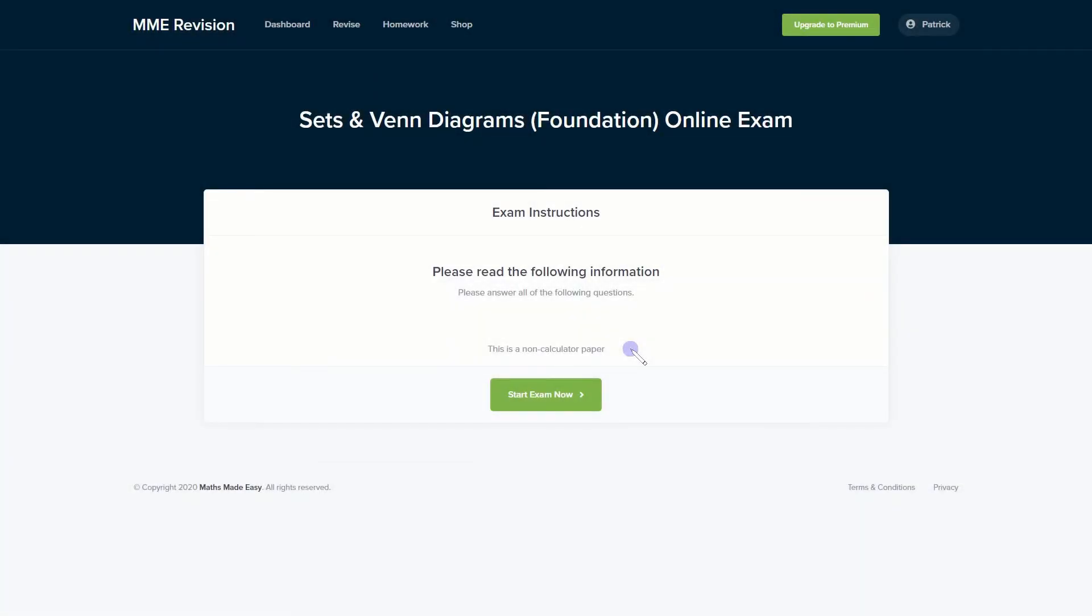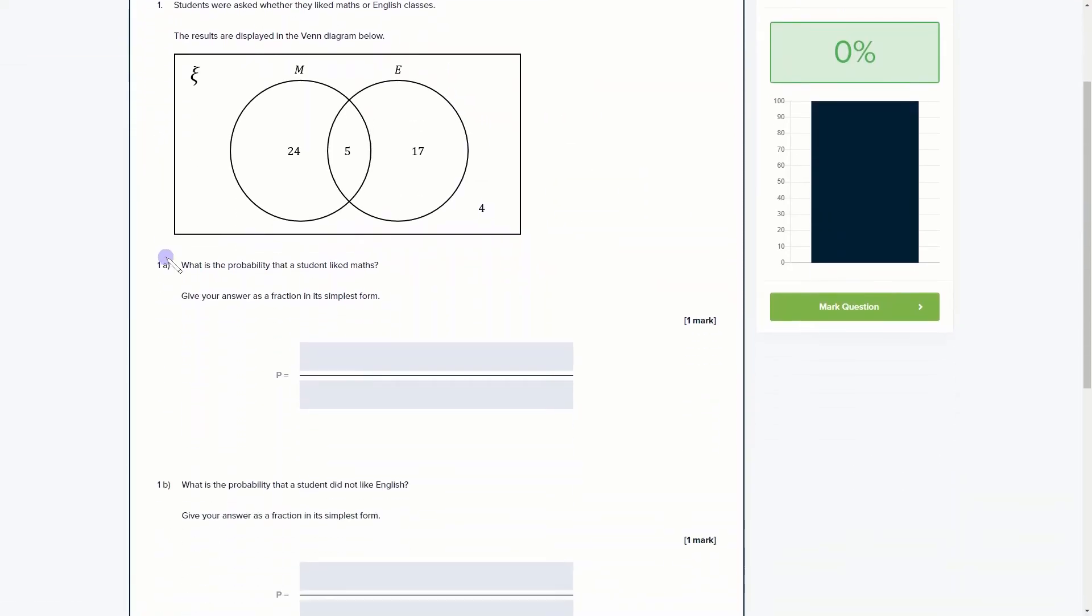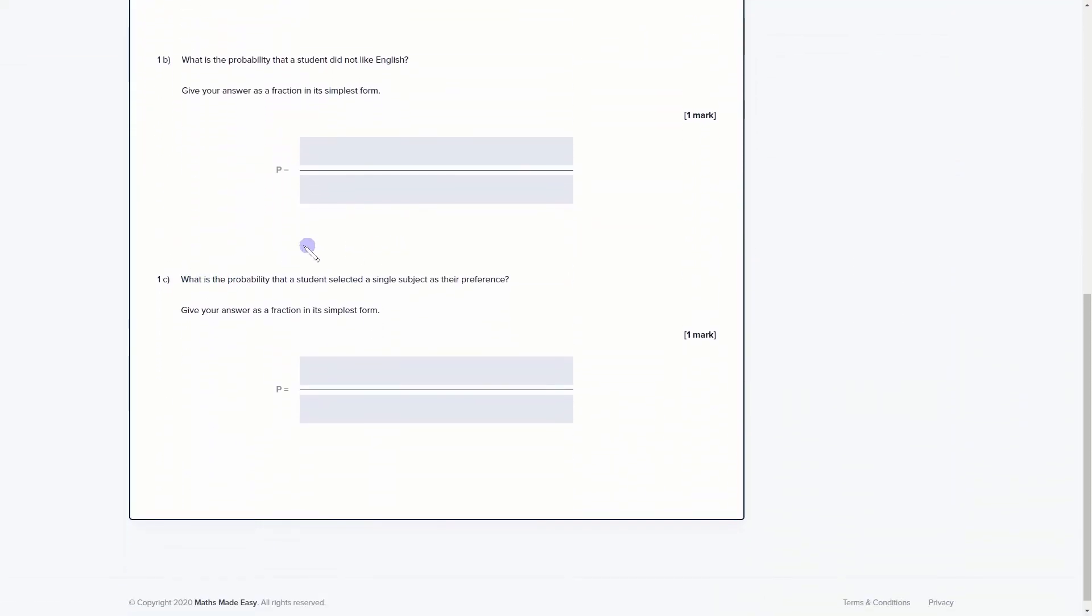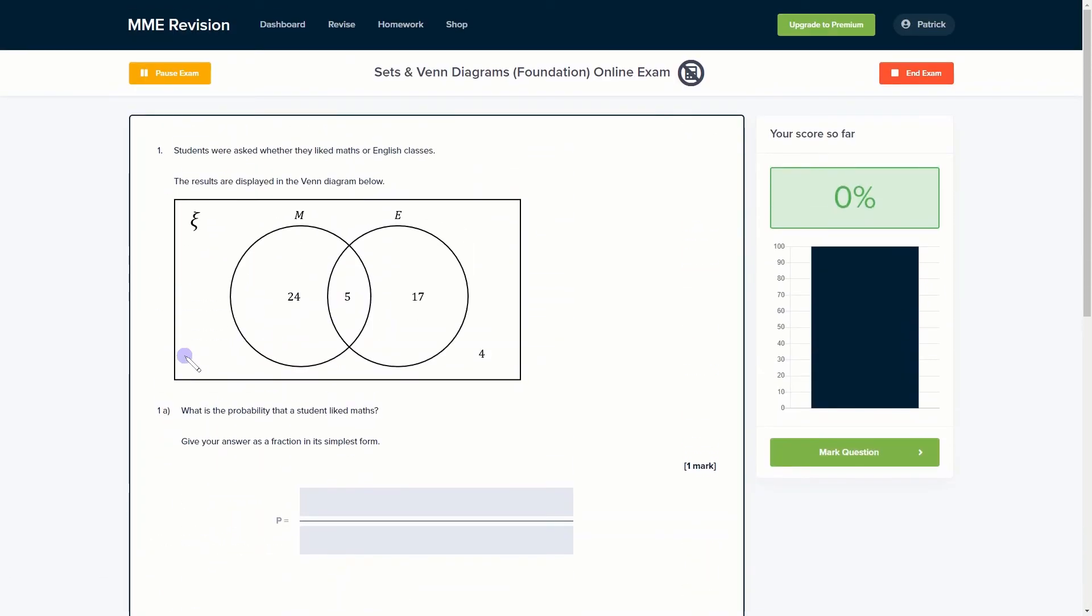So if you want to familiarize yourself with some Venn diagram exam style questions, then you can do so with our online exam. It's available through our revision platform. If you take the test, you'll find loads of different questions to have a go at, a variety of different question types, and you'll get instant feedback on all of it. So this is a really good way of keeping track of your progress and finding out where you need to improve. If you're interested, then you can click the link below and it will take you straight over there.